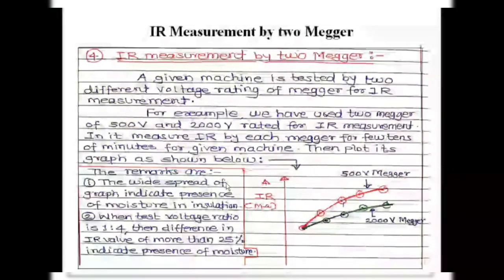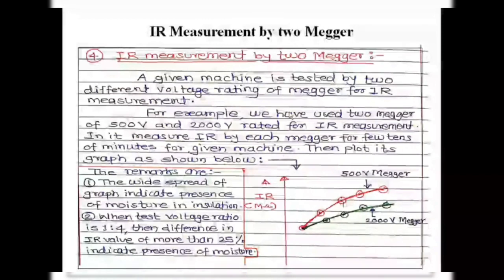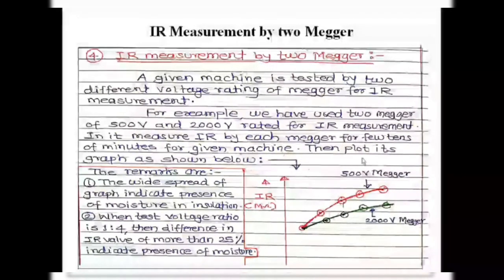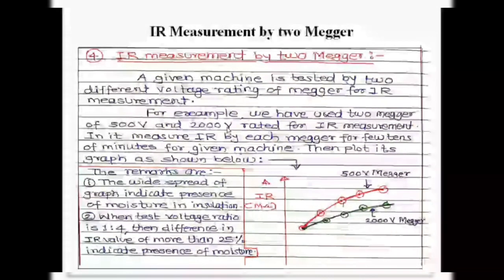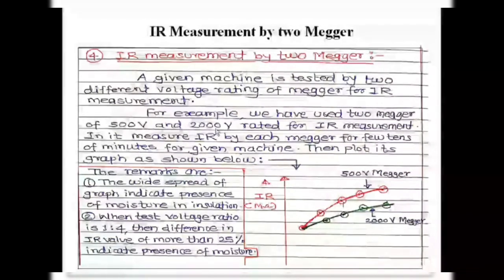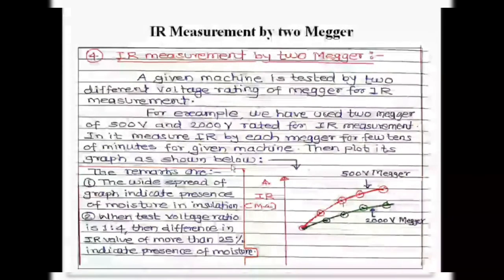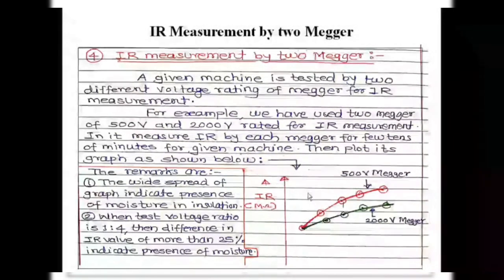The fourth method for interpreting the condition of insulation is IR measurement using two meggers. In all three previous methods, only one megger of a certain voltage rating is used. For this method, two meggers are required — one rated at 500 V and another at 2000 V. Their voltage rating ratio is 1:4. We take insulation resistance measurements using each megger for a few tens of minutes on the given electrical machine, first with the 500 V megger, then with the 2000 V megger, and then plot the graph.